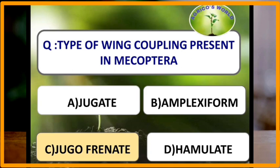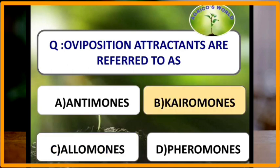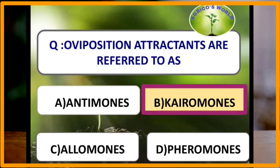The type of wing coupling mechanism present in Macroptera is jugophenate type. Oviposition attractants are referred to as kairomones. Kairomones give adaptive advantage to the receiver, for example a pest seeking a host or a parasite seeking a host.